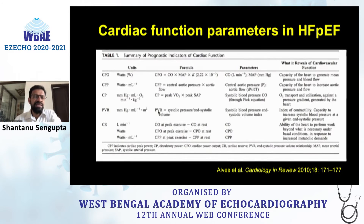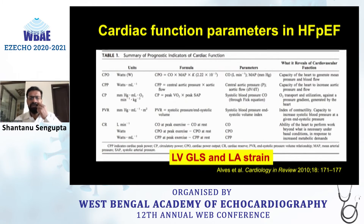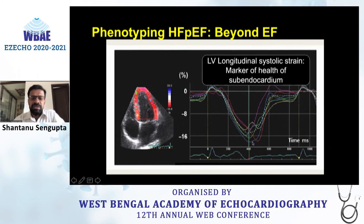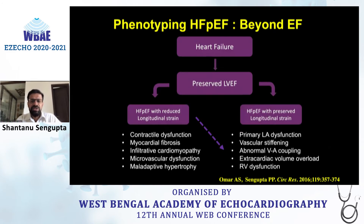Beyond ejection fraction, the most robust tool we now look at is global longitudinal strain (GLS) of the LV, and also left atrial strain in HFpEF patients. This gives important information about subclinical LV dysfunction. If the EF is normal, do not conclude the patient is fine — GLS tells you the health of the subendocardium. The normal cutoff is around minus 19; values trending toward zero indicate poorer subendocardial health. This information is now available on all echo machines and should be routinely assessed.